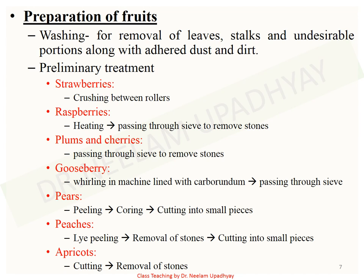If you require jam with stones, sieving is not done. For pears: peeling, then coring, then cutting into small pieces. For peaches: lye peeling, then removal of stones, then cutting into small pieces. For plums and cherries: passed through sieves to remove stones — again, if jam with stone is required, sieving is not done.